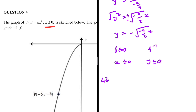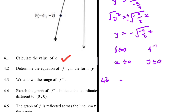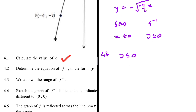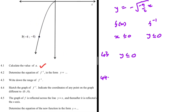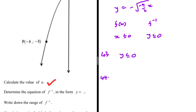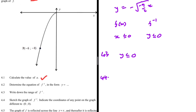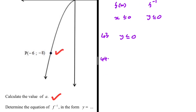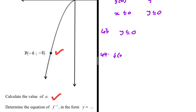In answering 4.2 we've also answered 4.3: the range of f inverse is y less than or equal to zero. Now for 4.4, we need to sketch the graph of f inverse and indicate coordinates of a point different from (0, 0). The easiest point to use is point P — because if on f(x) we have (x, y), then on f inverse we have (y, x). The inverse maps y values back to x.